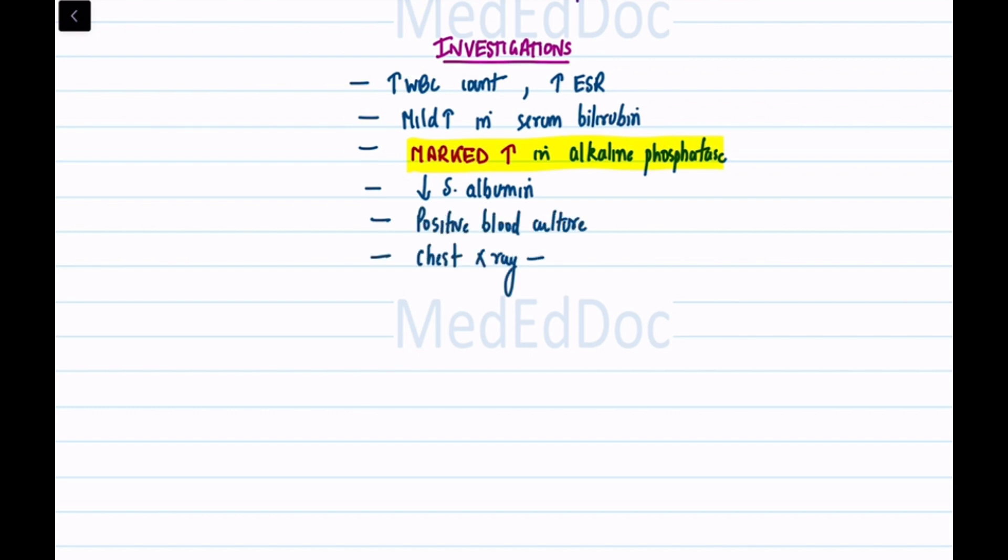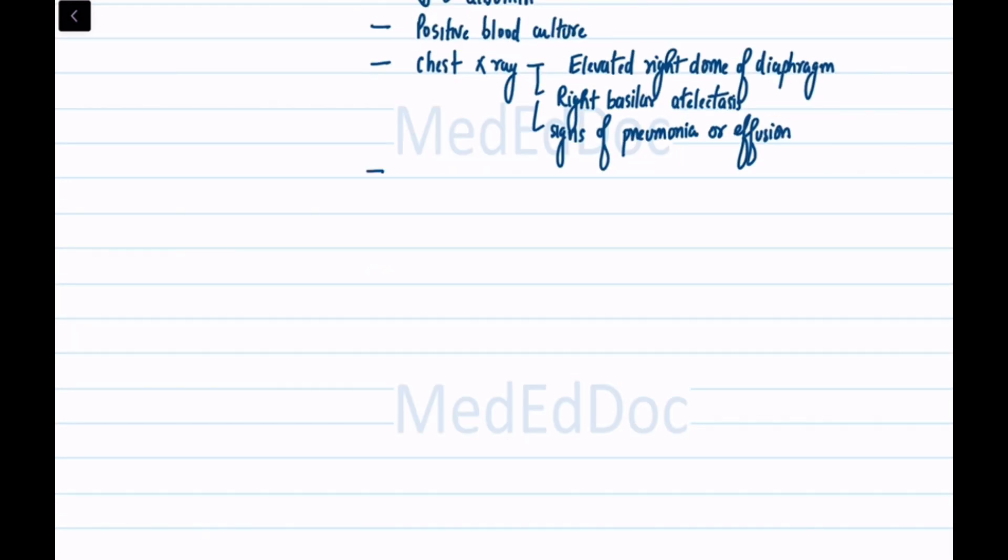Chest x-ray may reveal an elevated right dome of the diaphragm, right basilar atelectasis, and signs of pneumonia or effusion. Ultrasound is used to confirm the diagnosis.